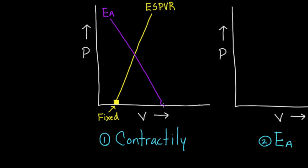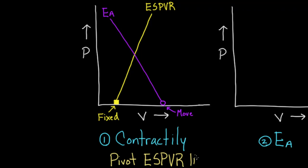At the bottom of the arterial elastance line, I think about it as having a little wheel. The reason for drawing a wheel is to show that if I wanted to move it, I could. In this particular case, we're going to leave the wheel alone and only change contractility. What changing contractility does is pivot the ESPVR line. So let's draw the initial box first — I take the two corners and draw a box connecting them.